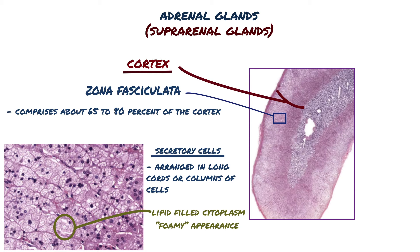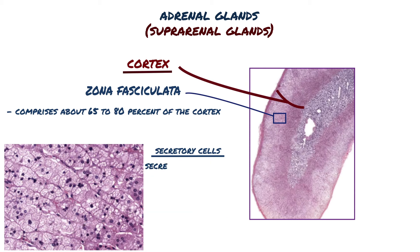These cells secrete glucocorticoids, especially cortisol, which affect carbohydrate metabolism by stimulating gluconeogenesis in many cells and glycogen synthesis in the liver.